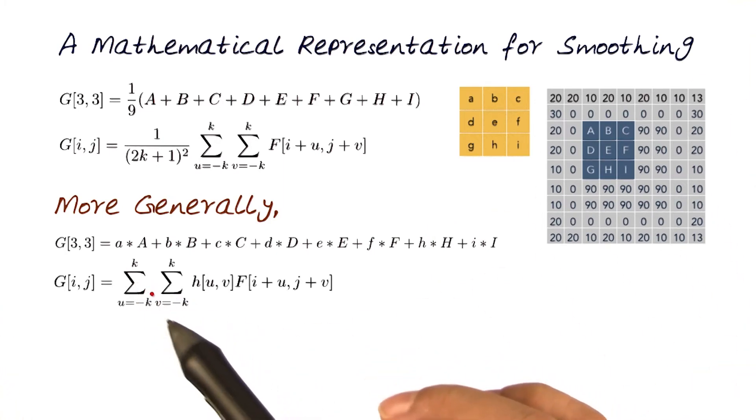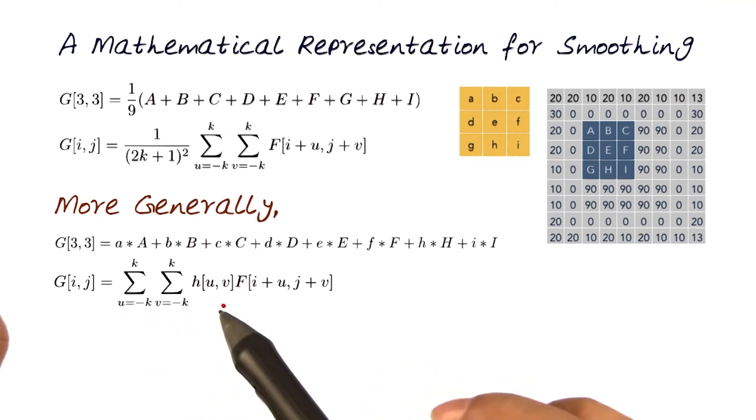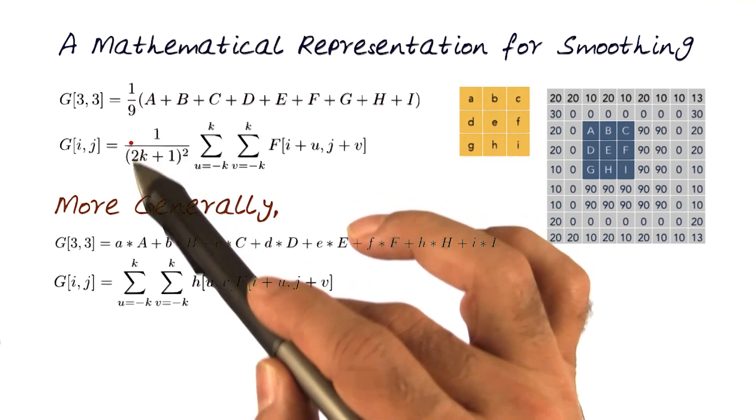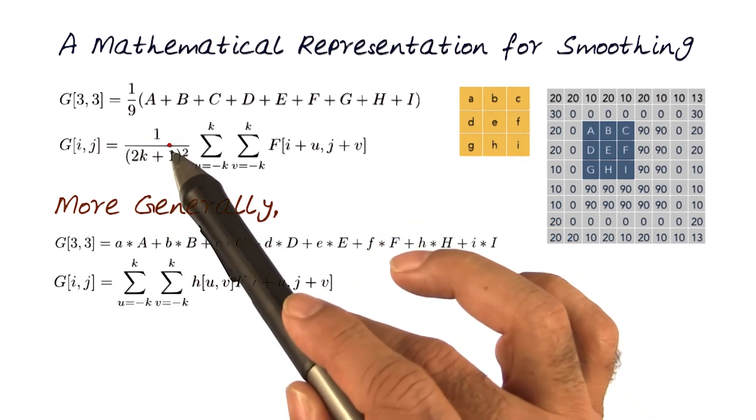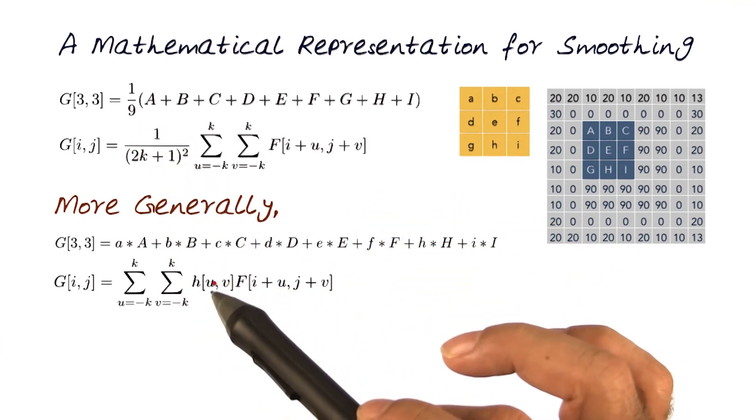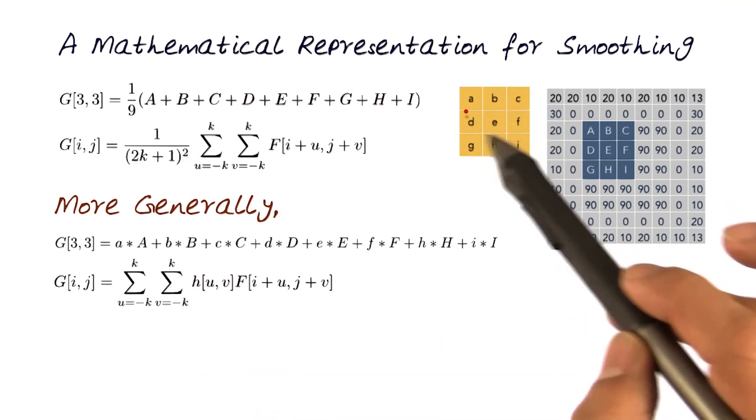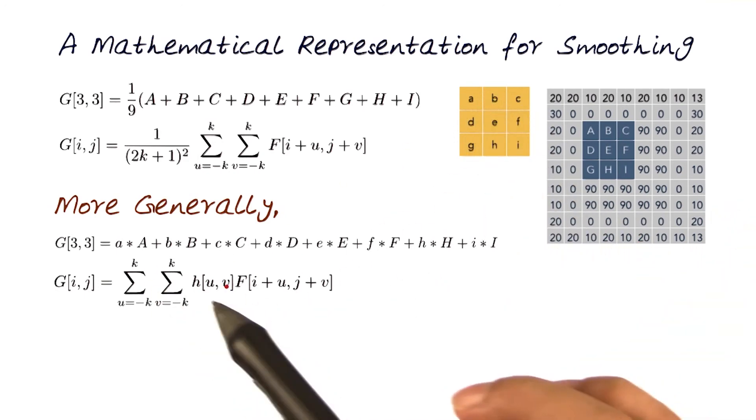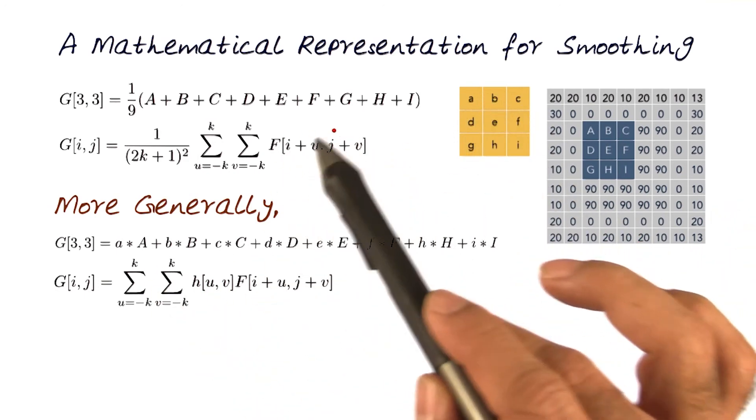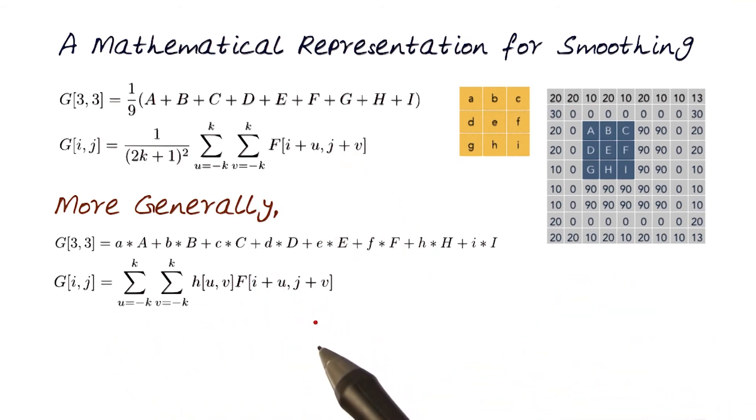Again, going from minus k to plus k in both u and v directions. What we've done is we've moved this part, which was the attribute weights, inside. So it now also depends on how things could change as we move around. And the same equation or the same terminologies. This is now the most general form of what we want to do in trying to do simple filtering.